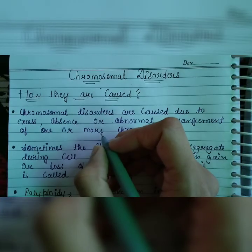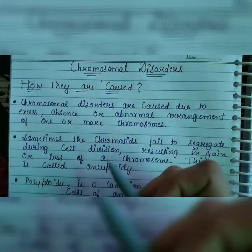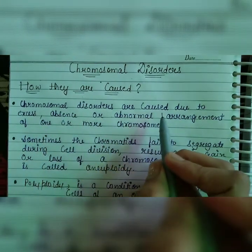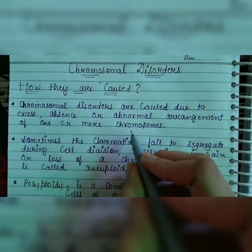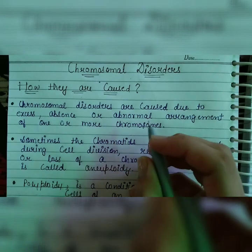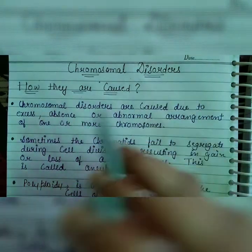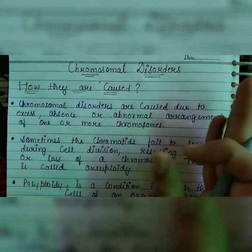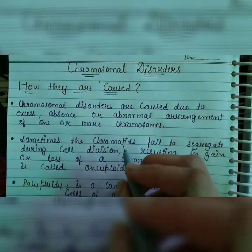Hello friends, welcome to Biotech World. In today's video we will start chromosomal disorders. Chromosomal disorders are caused due to excess, absence, or abnormal arrangement of one or more chromosomes. These disorders occur when a chromosome is present in excess, is absent, or its arrangement differs from the normal arrangement.